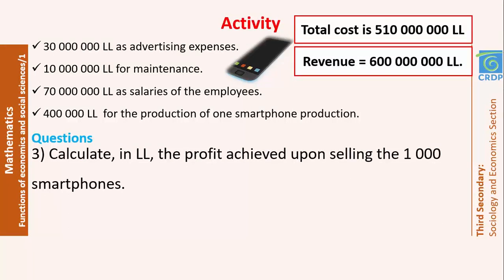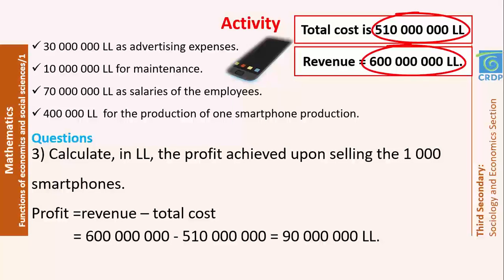In number 3, calculate in Lebanese lira the profit achieved upon selling the 1,000 smartphones. The revenue is the total amount of money obtained by the enterprise for selling these smartphones, while the profit is how much money the enterprise gained by this selling process. So, I have to subtract the total cost from the revenue. Part of the money that the enterprise got by selling the smartphones covers the expenses of production, and the extra part gained is called the profit — the revenue minus the total cost — which is 90 million Lebanese lira.